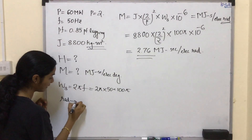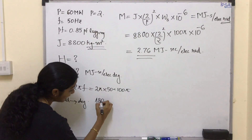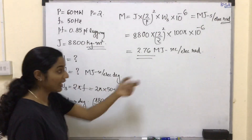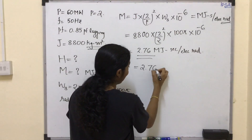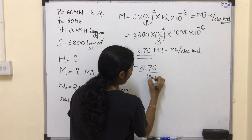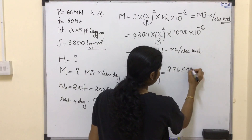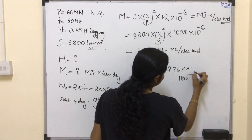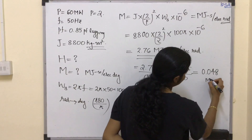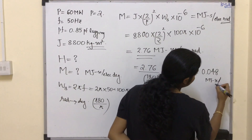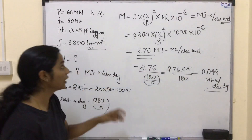To convert from radians to electrical degrees, we multiply by π/180. So M equals 2.76 multiplied by π divided by 180, which gives us 0.048 MJ·s per electrical degree.